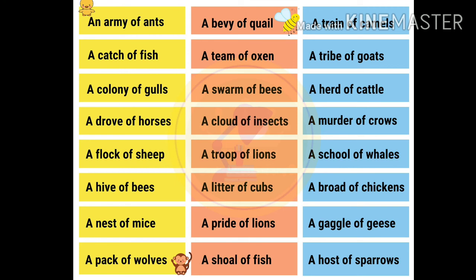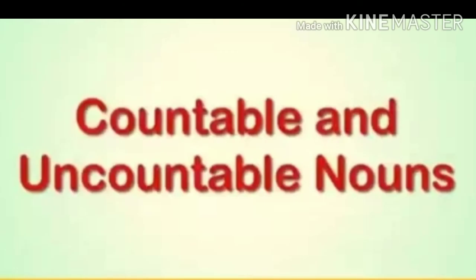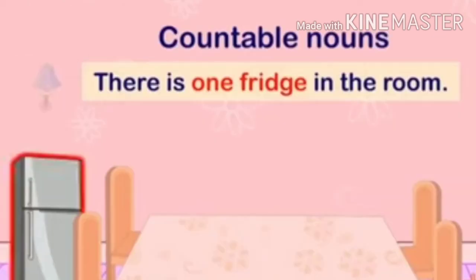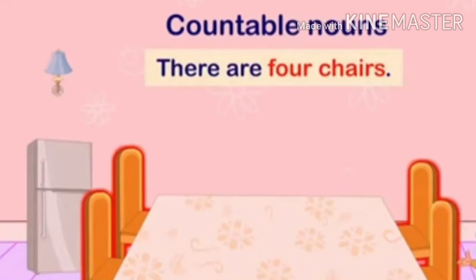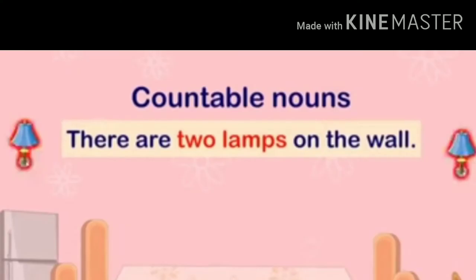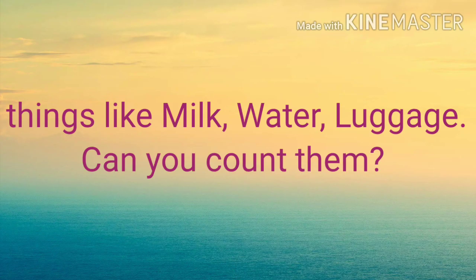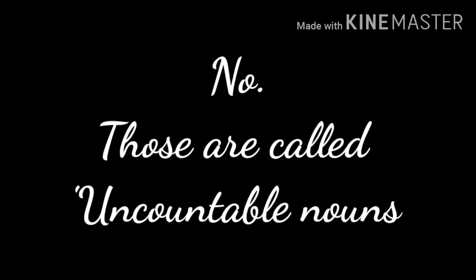Now let's look at countable and uncountable nouns. In this picture you can see there is one fridge in the room — you can count it. There are four chairs — you can count them. There are two lamps on the wall — you can count them. So these are countable nouns.